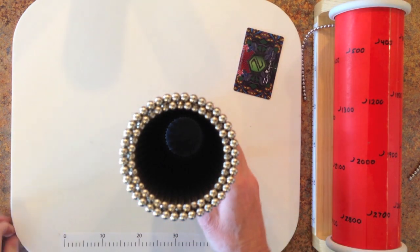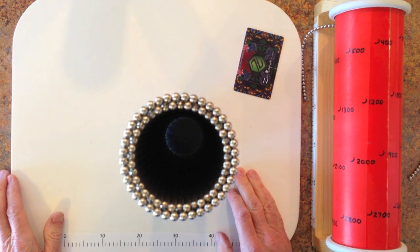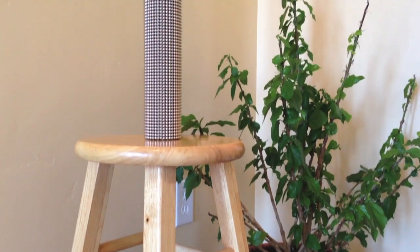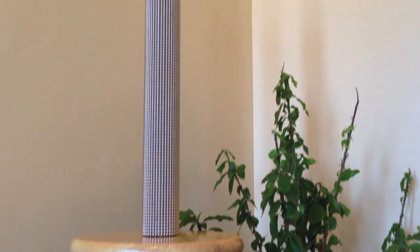So that is the double walled tube. Good luck and thanks for watching. Here's a tube with 133 rings and 10,640 magnets.